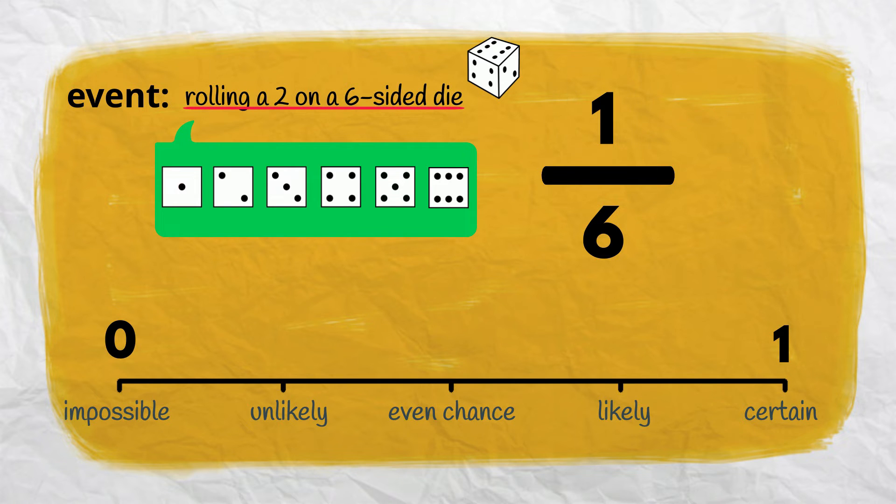The probability of rolling a 2 on a six-sided die is 1 in 6. We can represent this as a decimal by calculating 1 divided by 6. 1 divided by 6 is 0.166 recurring.